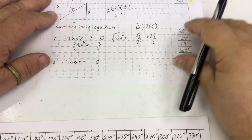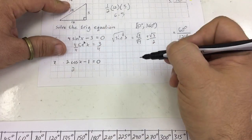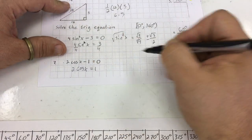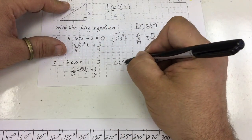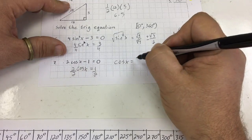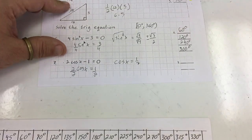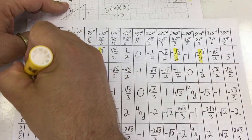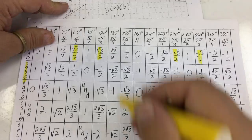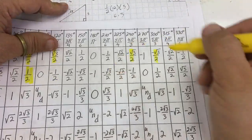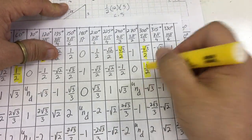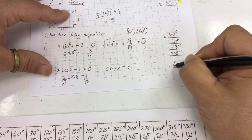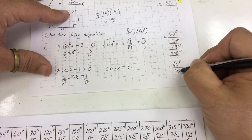This one only has 2 answers. I'm going to add 1 to both sides — that gives me 2 cosine x equals 1. Divide both sides by 2. I ask myself where does cosine x equal one half. I go to my trig table and look for where cosine x equals positive one half. That's at 60 degrees and at 300 degrees.